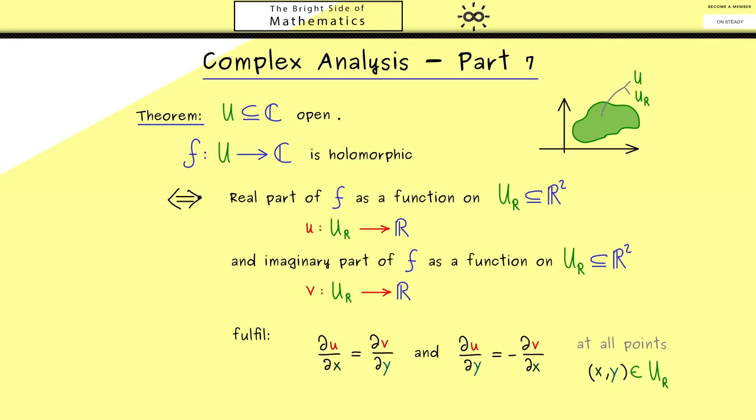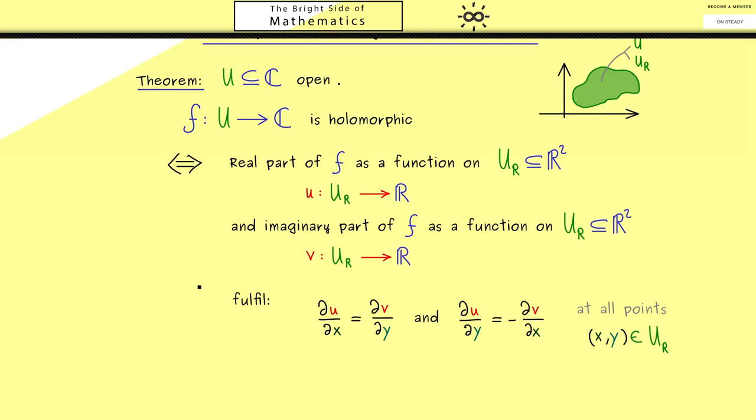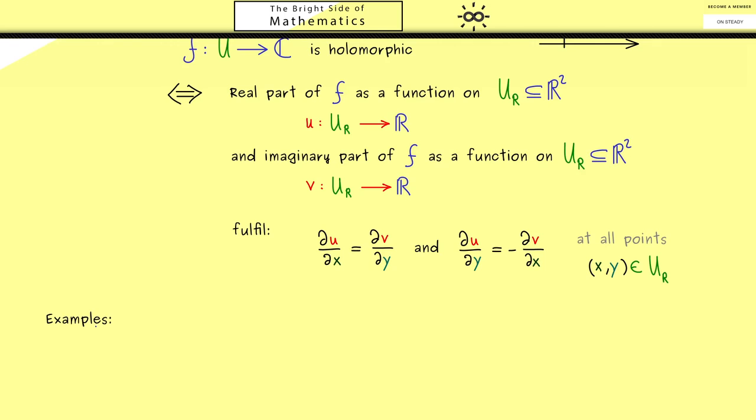In fact, this equivalence here we discussed in the last video. Now in this video, I want to show you concrete examples. I would say let's immediately start with a very simple one. So let's take the complex function f from ℂ to ℂ given as the identity, which means the number z is simply mapped to z again.